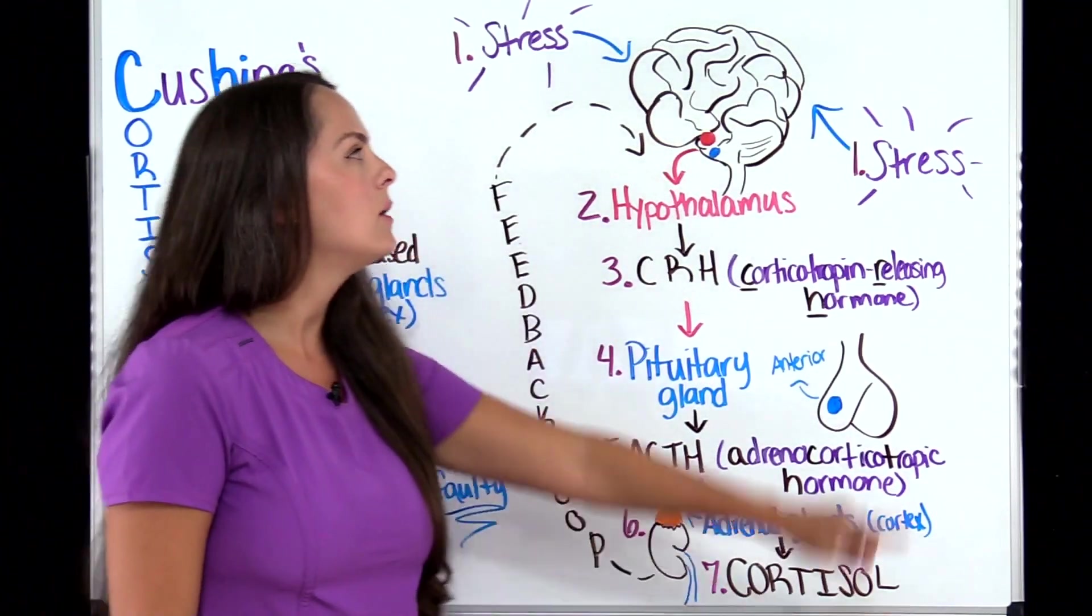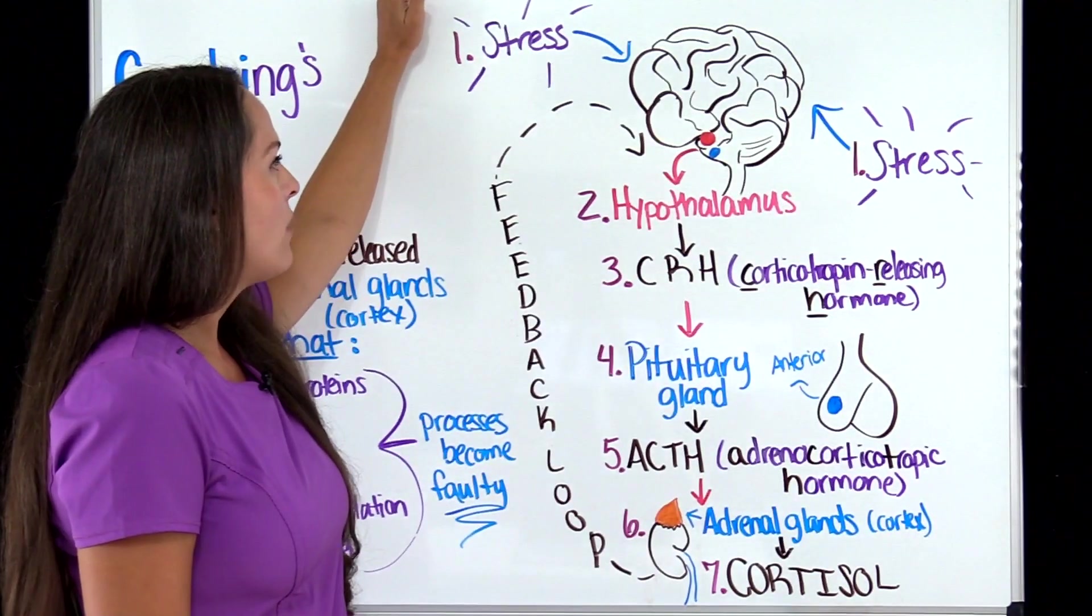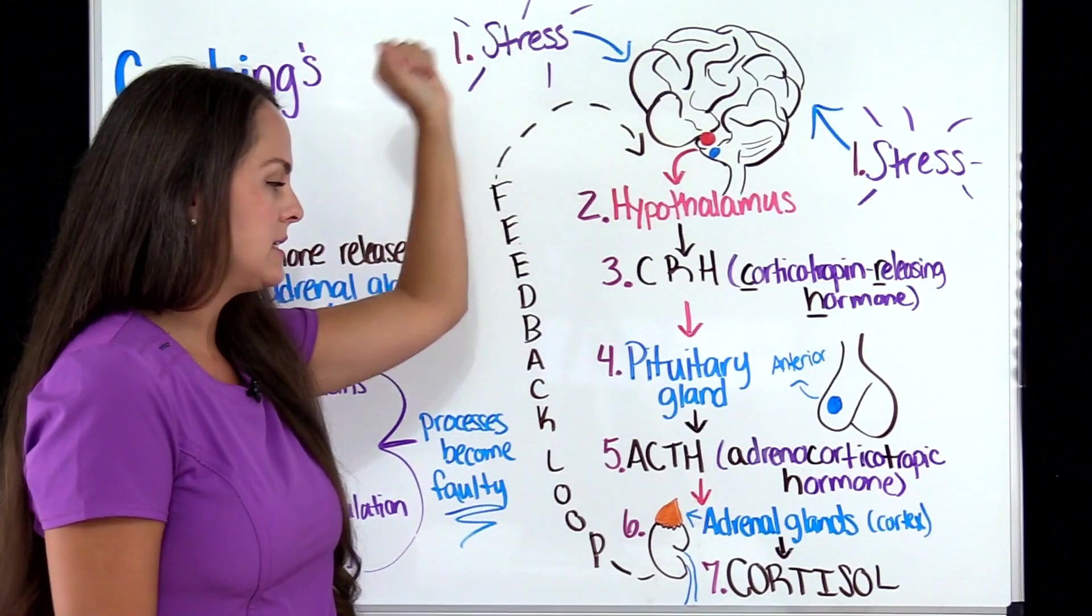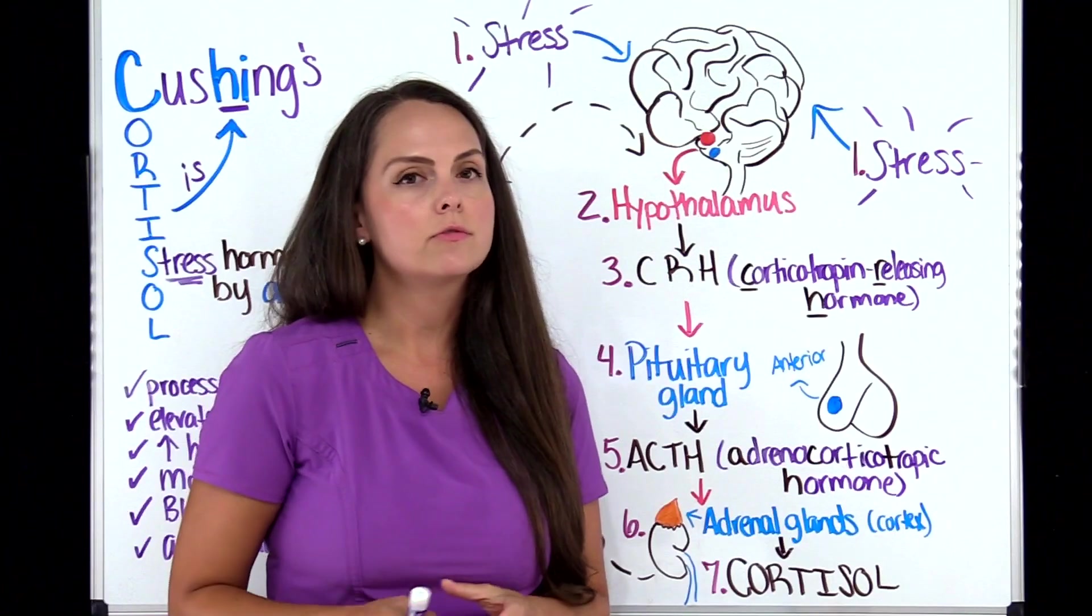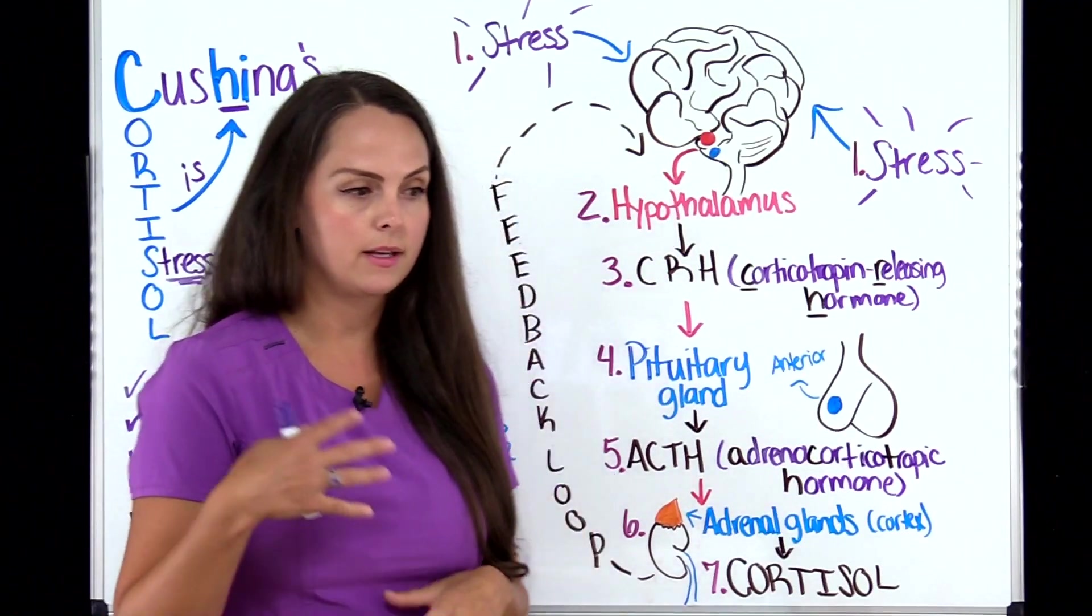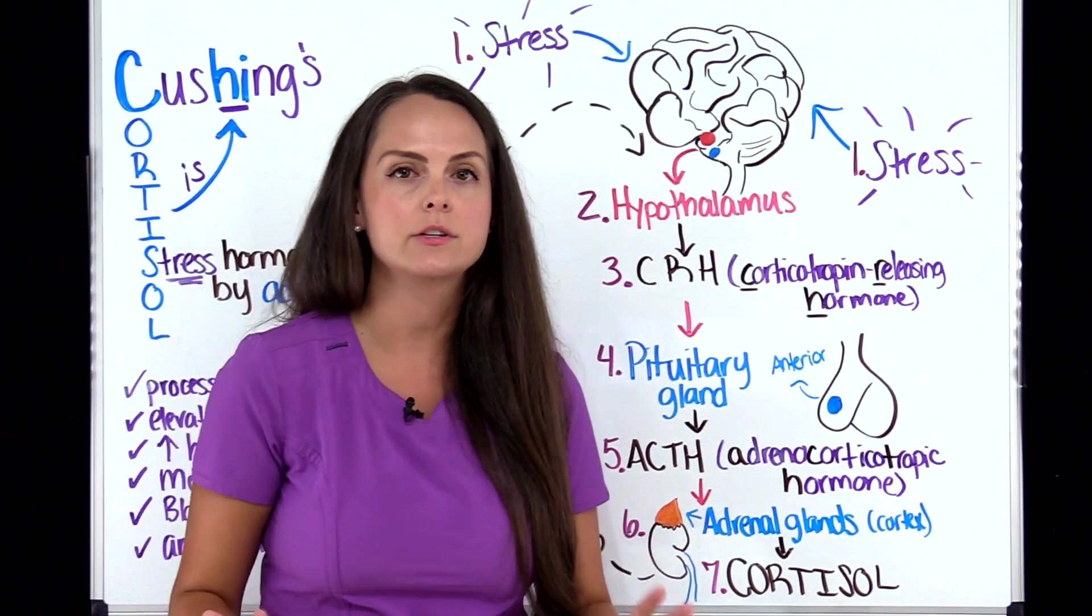So we have cortisol there to help us deal with the first step of what happened, the stress that this person is experiencing. So we have cortisol. Typically, it should be in small dose for a short period of time. The body picks that up and says, okay, we're good. We have enough cortisol.